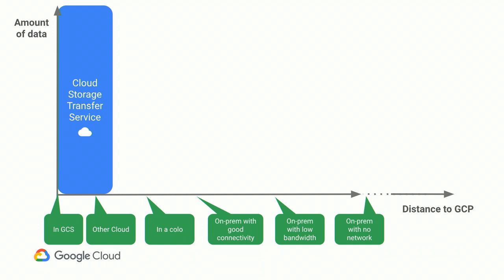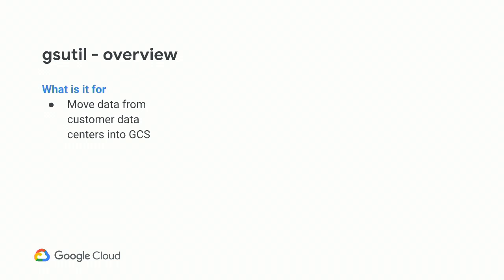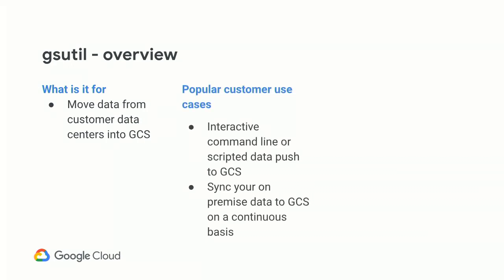The next step on the spectrum is if your data is a little further away — perhaps on a networking link provisioned by your colo or corporate office data center. For that, we have a product called GSutil. GSutil is designed to move data from your on-premises data center into Google Cloud. It's a command-line utility you can use ad hoc, in scripts, or as a cron job. You can also run it in a continuous mode — it sits and listens on a directory, and whenever new data comes in or data is updated, it pushes it to a GCS bucket.